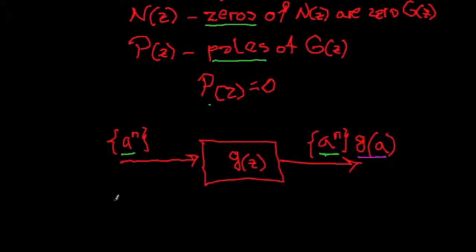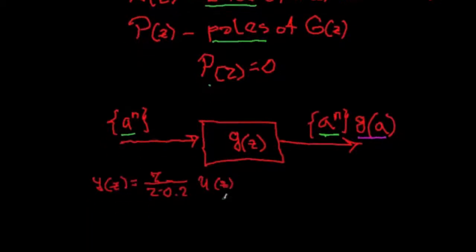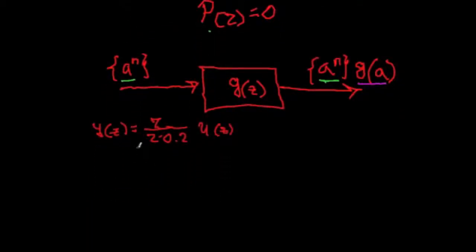We know already, let's say that we have a transfer function of Y(z) is equal z over z minus 0.2 times U(z). So, this is our G(z).